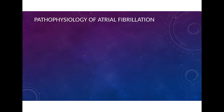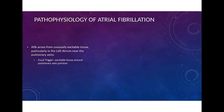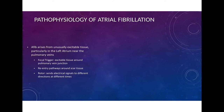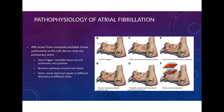Traditionally, we think of atrial fibrillation as arising from unusually excitable tissue inside the left atrium, in particular near the pulmonary veins. These triggers can include a focal source of atrial fibrillation, usually coming from right around the junction between the pulmonary vein tissue and the left atrial tissue; re-entrant pathways around scar tissue within the atrium itself; and something called a rotor, which sends signals in different directions throughout the atrium at different rates and causes irregularities in the rhythm.